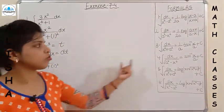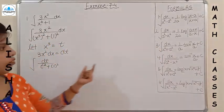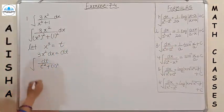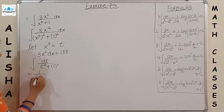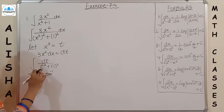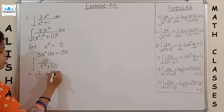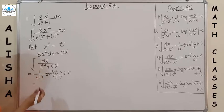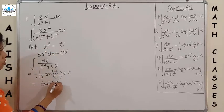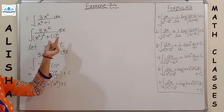This form represents the third type: integration of dx upon (x² + a²) = (1/a) tan⁻¹(x/a). Here a = 1, so the answer is (1/1) tan⁻¹(t/1) + C. Since a = 1 we don't need to write it, so putting t = x³, the answer is tan⁻¹(x³) + C.